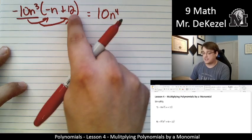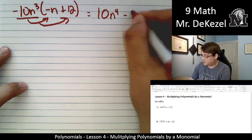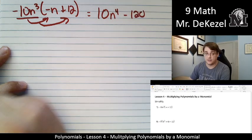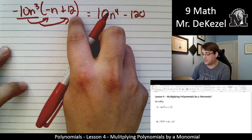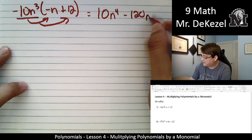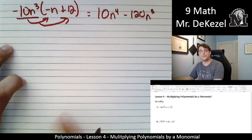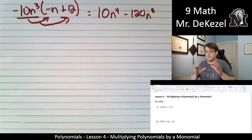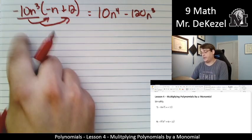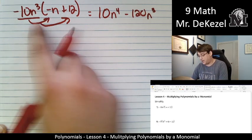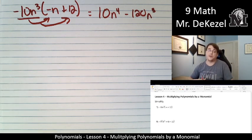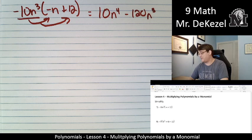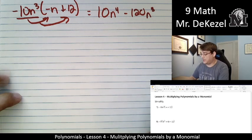Our next term, minus 10 times 12, that's minus 120. And then we just bring our n over, because we don't have anything to multiply it by, and that's n³. So when we're multiplying this binomial by this monomial, we are distributing it across both terms, multiplying the numbers by the numbers and the variables by the variables.